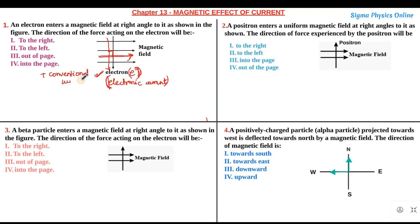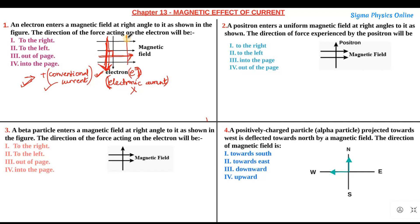The current which flows due to the flow of positive charges is known as the conventional current. In these type of questions we will not consider the electronic current but rather the conventional current — that is, the current direction will be considered as the direction in which the positive charges are moving. Since the electrons are moving downwards, the direction of movement of electrons is opposite to that of the positive charges, so the positive charges must be moving upwards.